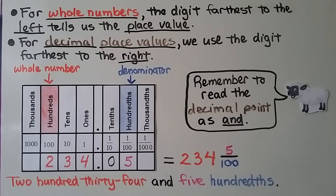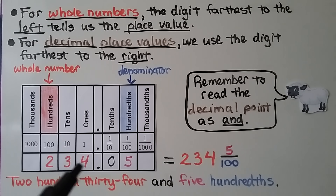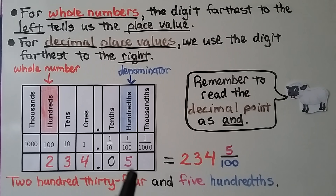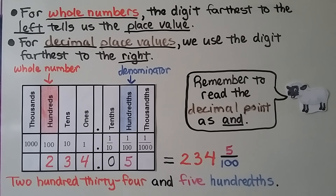For whole numbers, the digit farthest to the left tells us the place value — we can see this 2 is in the hundreds place, so we know we have 234. For decimal place values, we use the digit farthest to the right. We know we have hundredths here. We have 234 and 5 hundredths. Remember, when we read a decimal, we read the decimal point as the word 'and' — 234 and 5 hundredths.